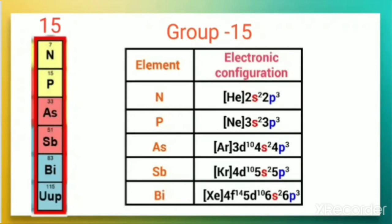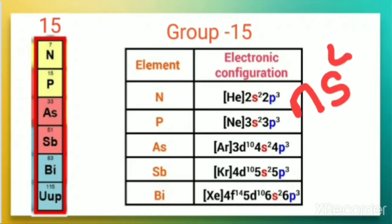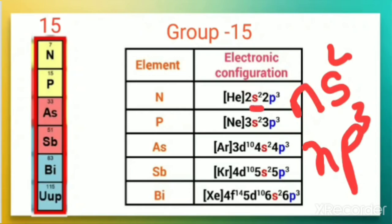Group 15 elements — nitrogen, phosphorus, arsenic, antimony, bismuth — have a similar pattern of electronic configuration in which the outermost shell has 2 electrons in s and 3 electrons in p. The general electronic configuration for group 15 is ns², np³.